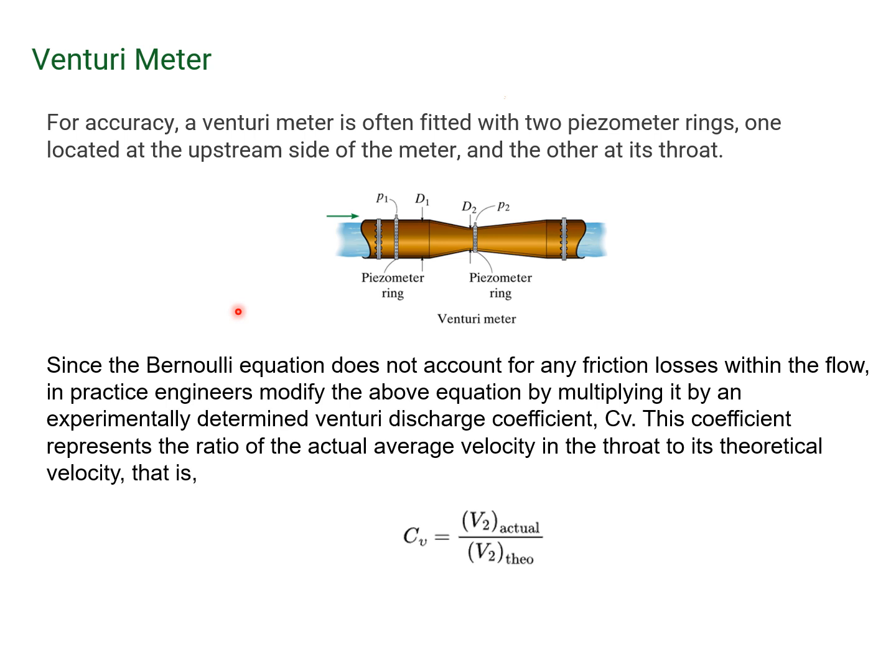One way engineers do to make this a little bit more accurate is that since the Bernoulli equation doesn't directly account for any friction losses within the flow, engineers usually modify the equation by multiplying it by an experimentally determined Venturi discharge coefficient, CV. This coefficient represents the ratio of the actual average velocity in the throat to its theoretical value.